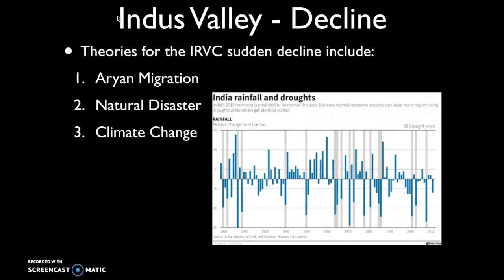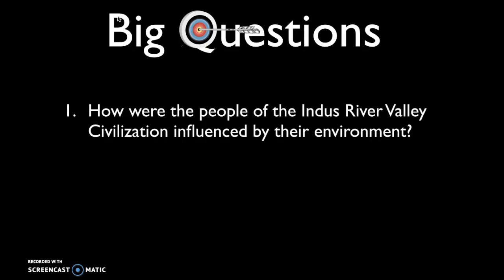The theory most historians today favor is climate change. This region experiences dramatic climate shifts due to monsoon winds, and scientific evidence suggests that the period of the Indus River Valley civilization's collapse corresponds to widespread drought in the region. This is an important factor to be aware of — climate change can lead to the rapid decline of civilizations, as we see with the Indus River Valley civilization.